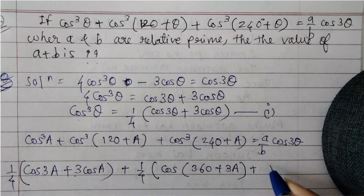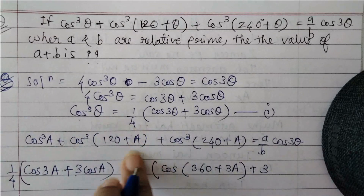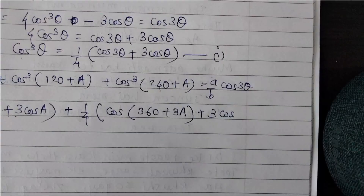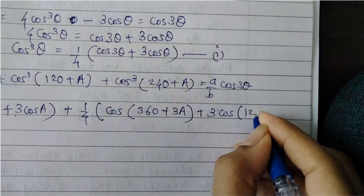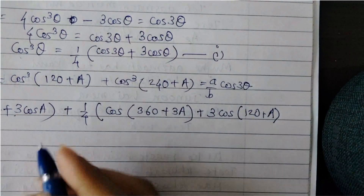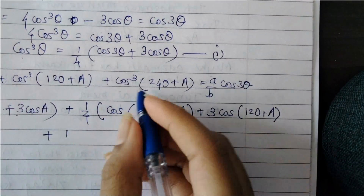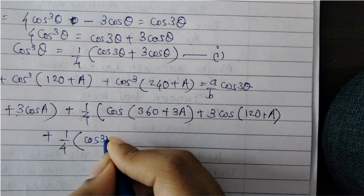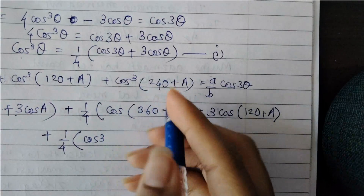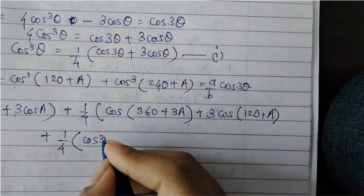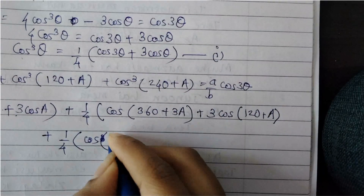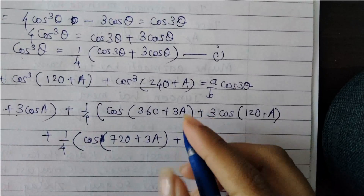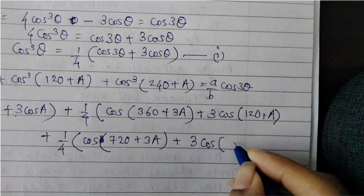For cos³(120+A), the whole angle is (120+A), so it becomes (1/4)[cos3(120+A) + 3cos(120+A)] = (1/4)[cos(360+3A) + 3cos(120+A)]. For cos³(240+A), similarly it becomes (1/4)[cos(720+3A) + 3cos(240+A)].